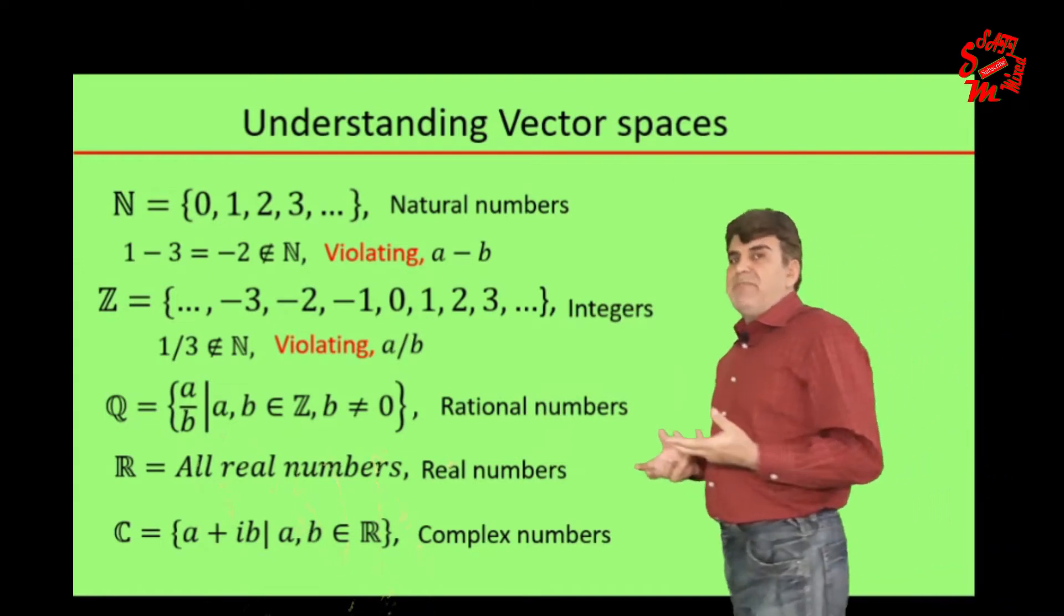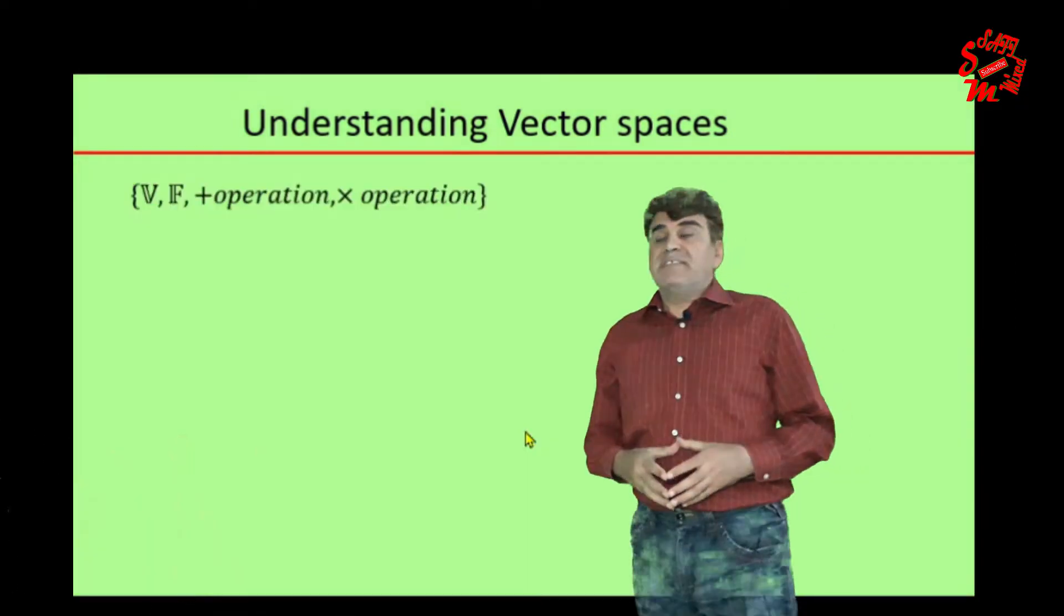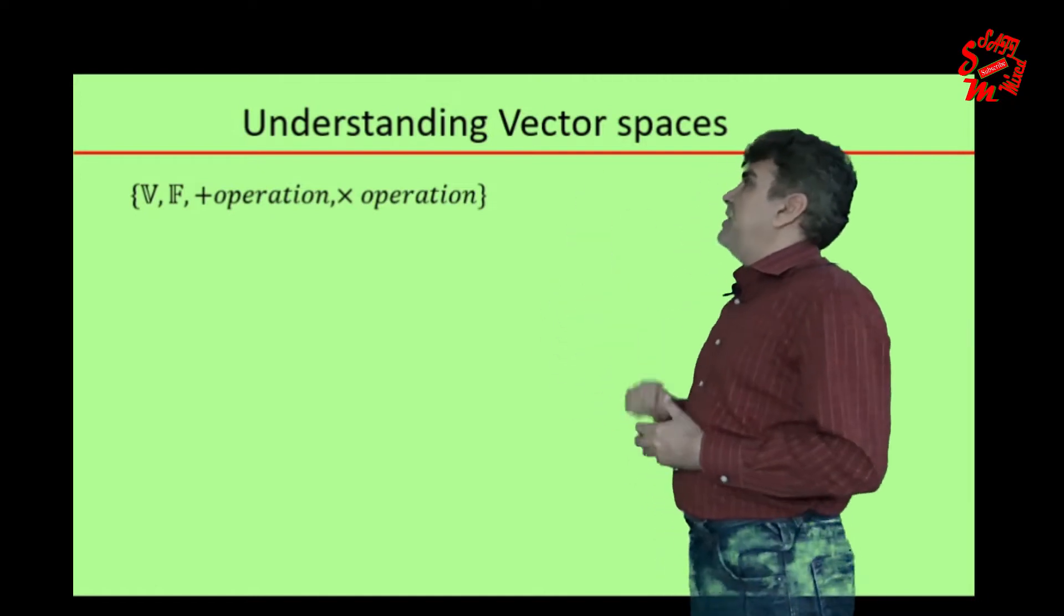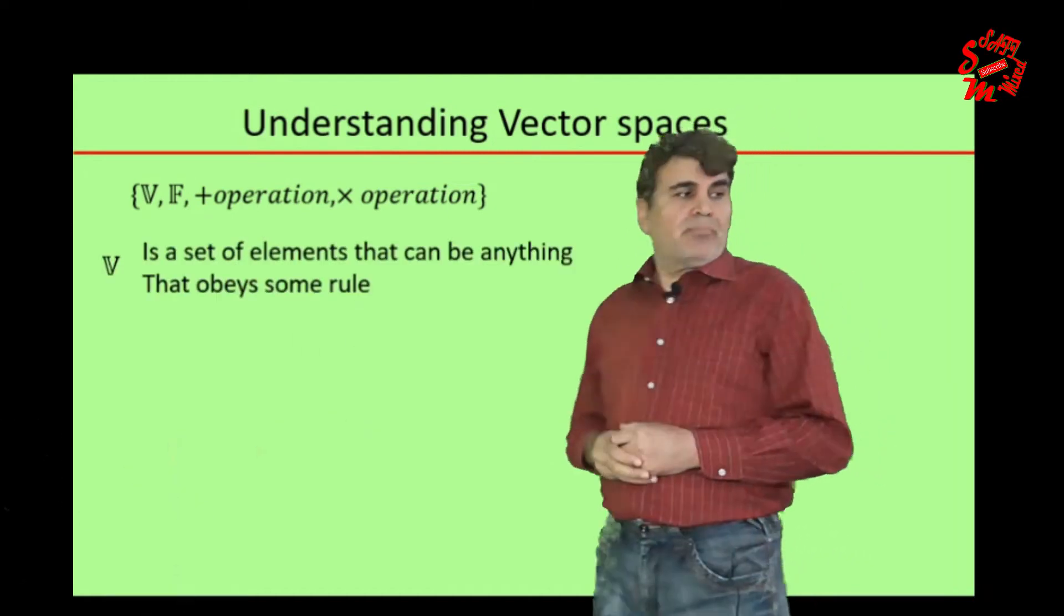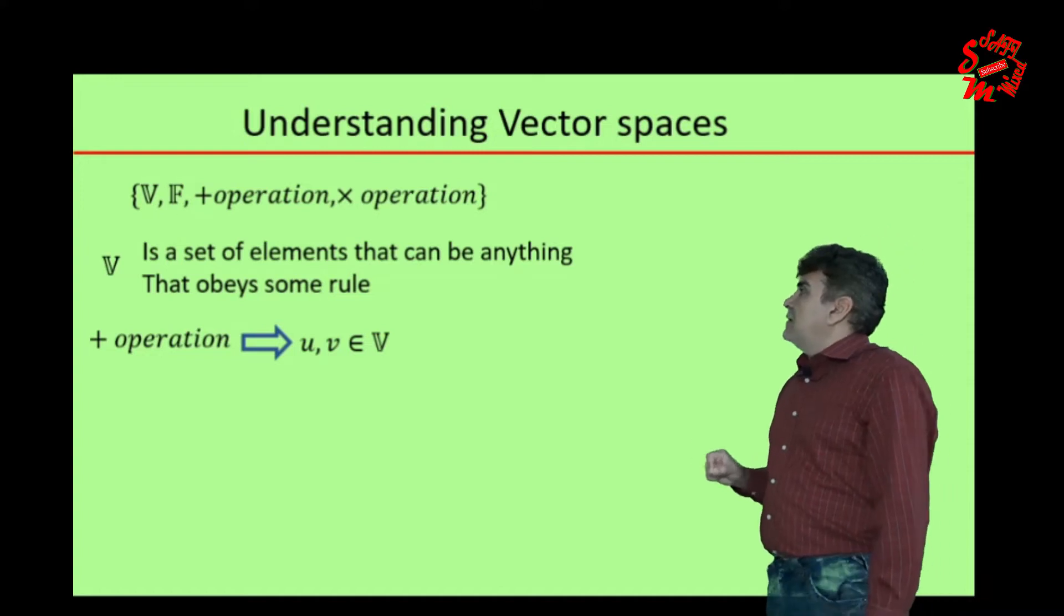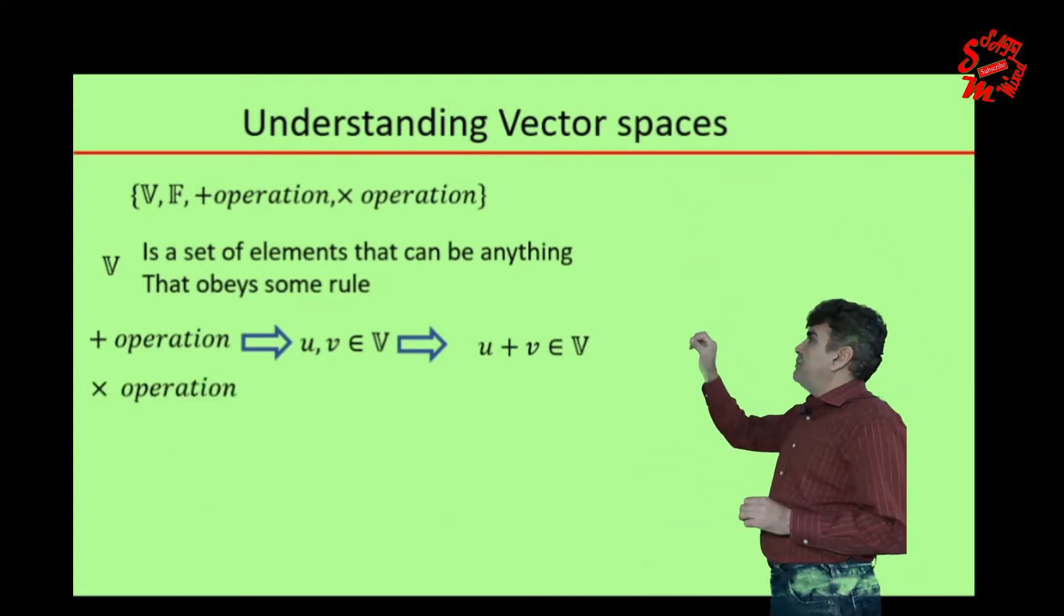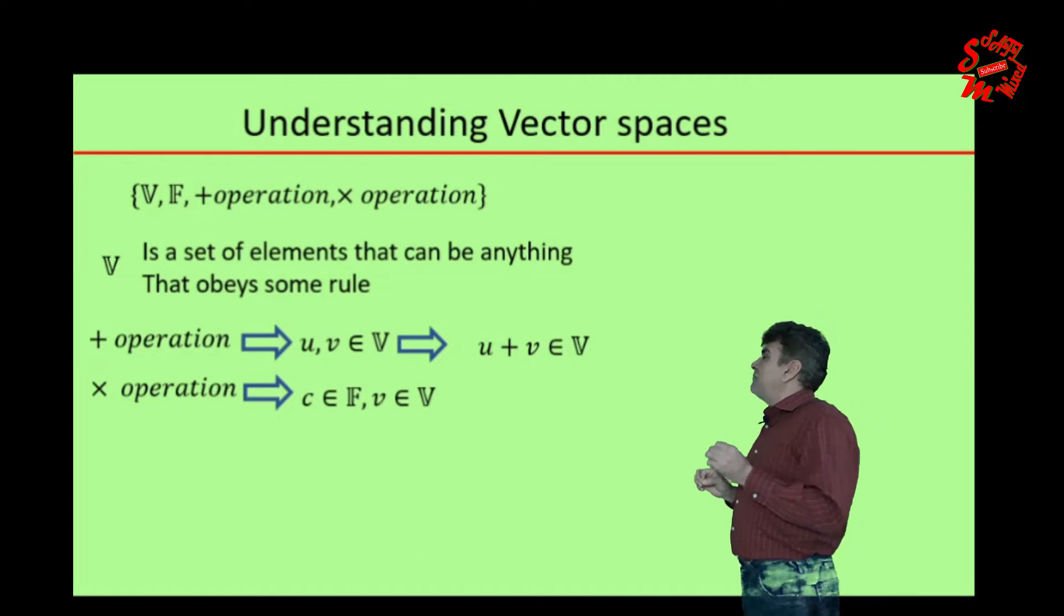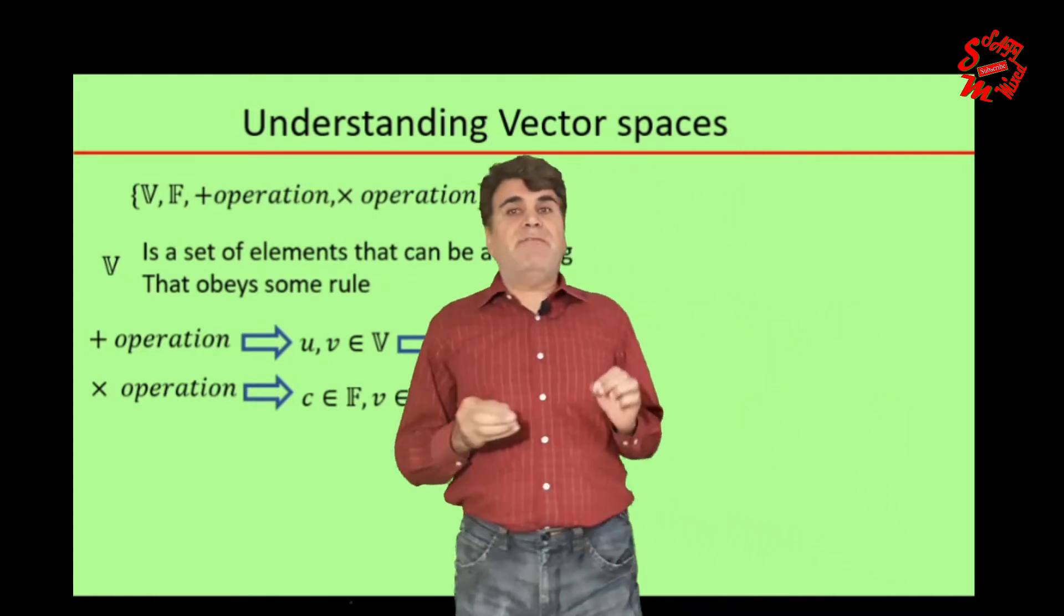Now, equipped with the definition of a field, we are in position to define a vector space V. A vector space V consists of four elements: V, F, the plus operation, and the multiplication operation. Where V by itself is a set of elements that obey certain rules. The plus operation implies that if U and V are elements of V, then the sum of these elements also belongs to the space V. Similarly, the multiplication operator implies that if C belongs to F and U belongs to V, then C multiplied with element U is another element that belongs to the space V. These operations further obey the following axioms.